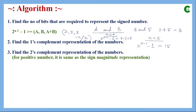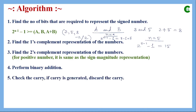After finding the two's complement representation of both given numbers, we perform the binary addition between a and b. After performing the binary addition, we check the carry. In one's complement arithmetic, if a carry is generated, we add that carry to the LSB of the result. But here in two's complement arithmetic, if any carry is generated, we simply discard it — we don't do any further addition with the LSB. Remember this key difference.